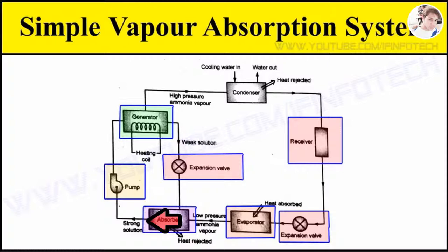In the absorber, the ammonia vapor is absorbed by the weak solution which contains less ammonia. Water has the ability to absorb very large quantities of ammonia vapor, and a strong aqua-ammonia solution is formed. Some form of cooling arrangement is provided, which is necessary in order to increase the absorption capacity of water, because at high temperatures water absorbs less ammonia vapor.